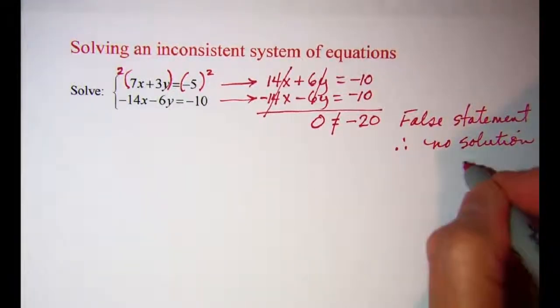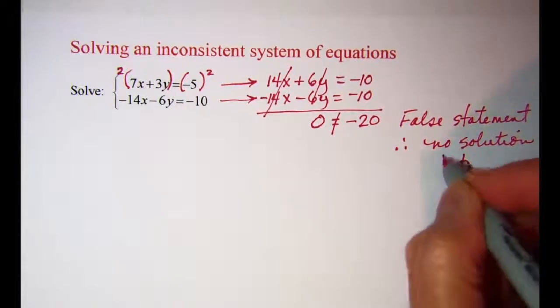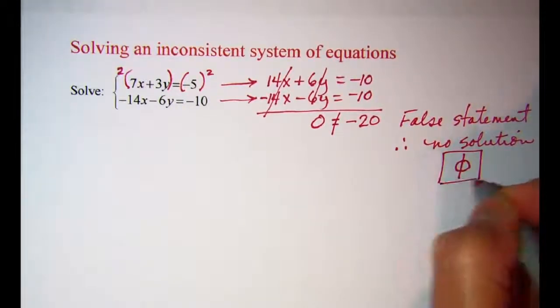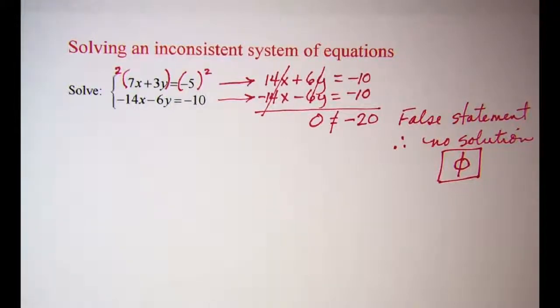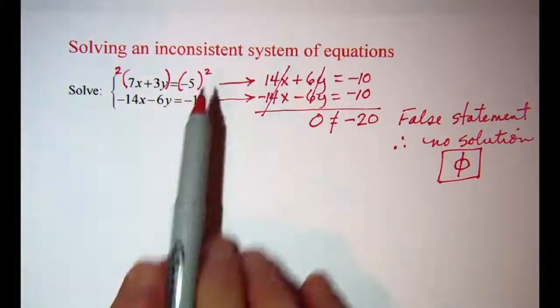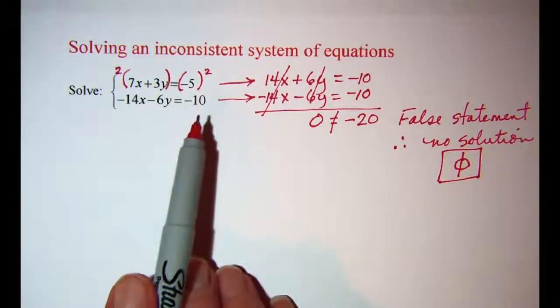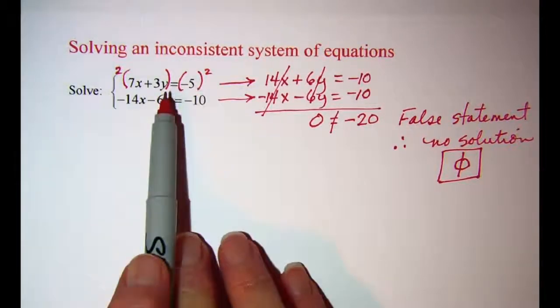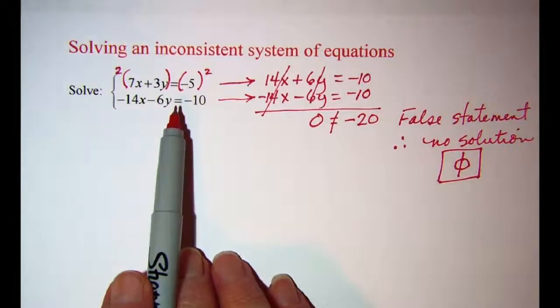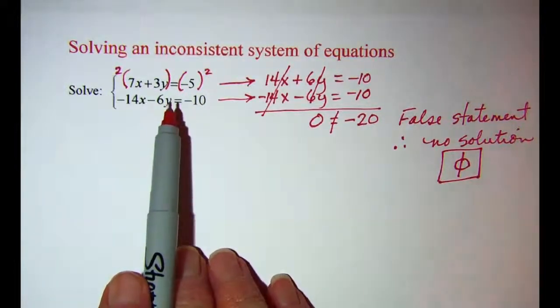You may want to write an empty set. This is your symbol that indicates an empty set. So this system is inconsistent but the equations are still independent of each other.